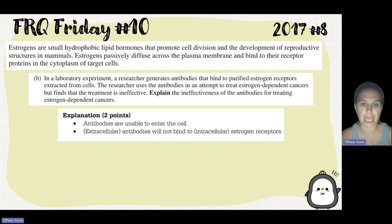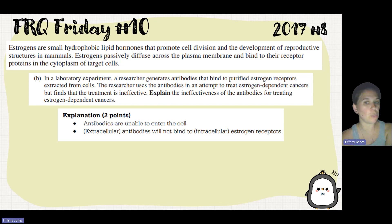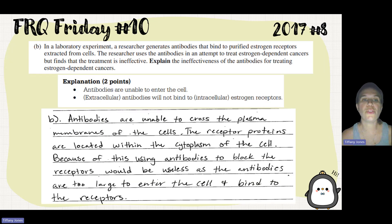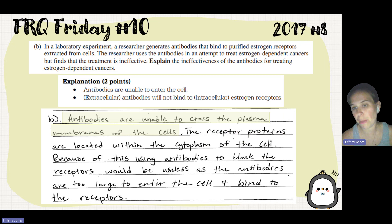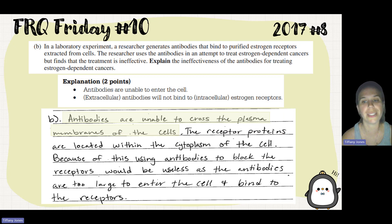Options: antibodies are unable to enter the cell, and antibodies will not bind to the estrogen receptors. The student answer: antibodies are unable to cross the plasma membrane of the cells. The receptor proteins are located within the cytoplasm of the cell. Because of this, using antibodies to block the receptors would be useless, as antibodies are too large to enter the cell and bind to the receptors.